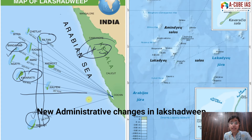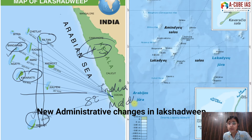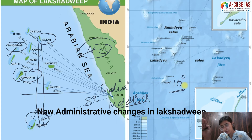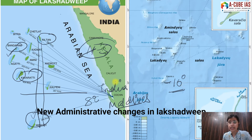One extra piece of information: it is the Eight Degree Channel that divides India from Maldives. Also remember it is the Ten Degree Channel that divides the Andaman and Nicobar Islands from the rest — Myanmar and other areas to the east. So remember these eight, nine, and ten degree channels.